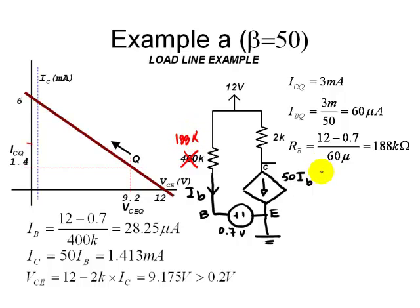So if RB were 188 kiloamps, in that case, then ICQ would be right here, right in the middle. 3 milliamps. And we will have an optimized Q point. And that ends this exercise.